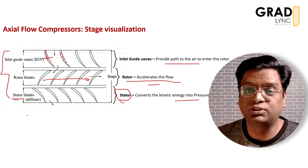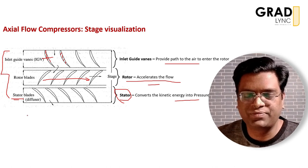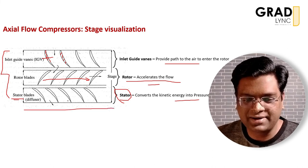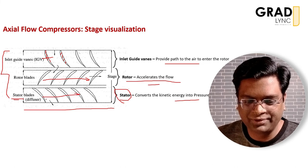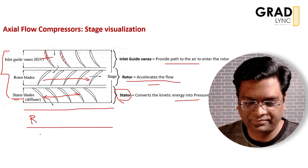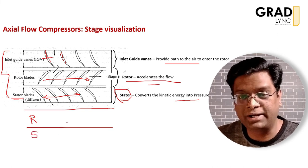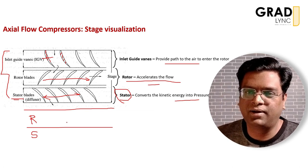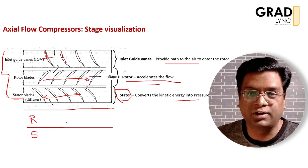These three rows of blades — inlet guide vanes, rotor, and stator — constitute one stage. In subsequent stages, inlet guide vanes are not added again since the stator blades already act like guide vanes; additional stages consist directly of rotor and stator pairs. Up to 20 or 25 such stages can be added, improving efficiency and pressure rise. In the next lecture we will discuss velocity triangles and associated concepts for analyzing flow across an axial flow compressor.